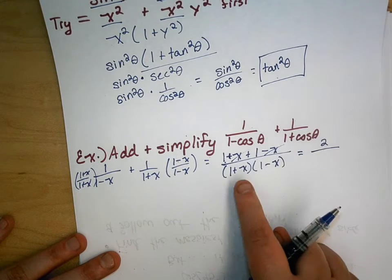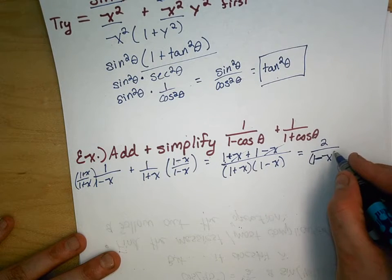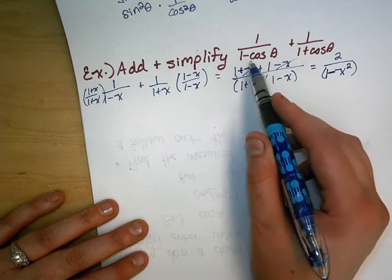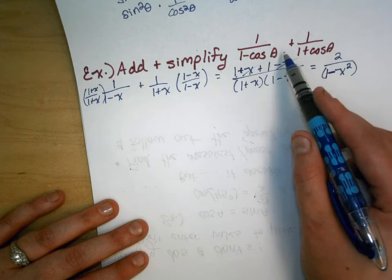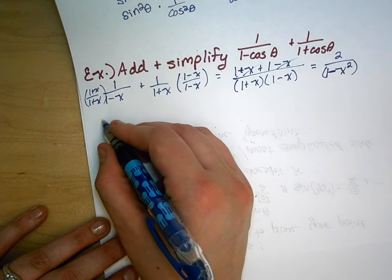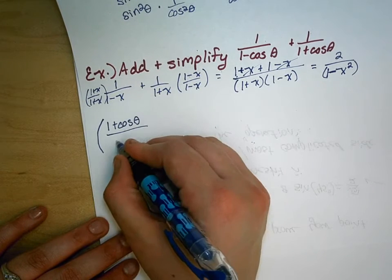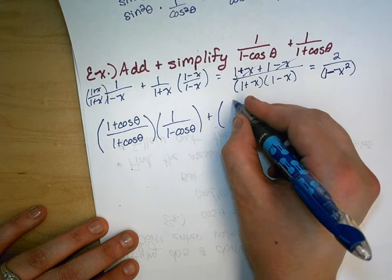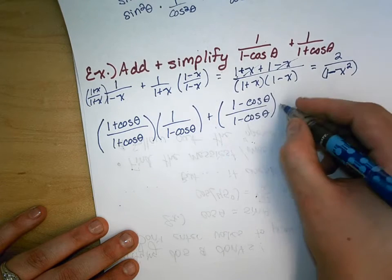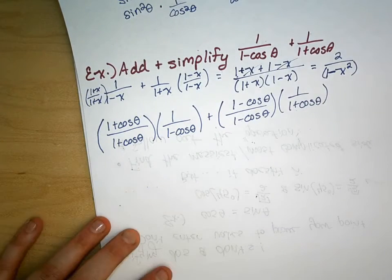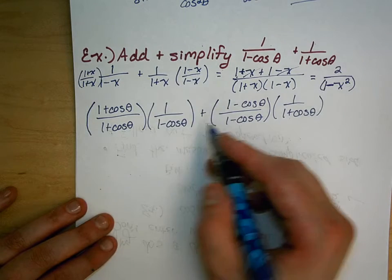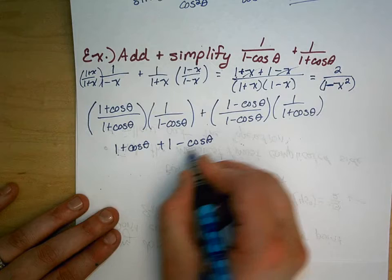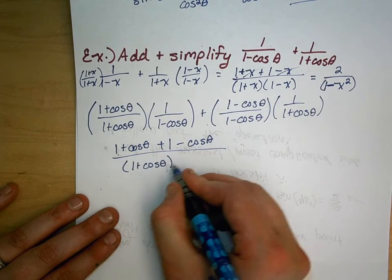So let's do the same thing for this trig expression. You might see that we just substituted x in for cosine. So that would be multiplying 1 over 1 minus cosine theta by 1 plus cosine theta over 1 plus cosine theta, plus multiplying 1 over 1 plus cosine theta by 1 minus cosine theta over 1 minus cosine theta. Working all this out, we get 1 plus cosine theta plus 1 minus cosine theta all over 1 plus cosine theta times 1 minus cosine theta.